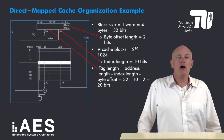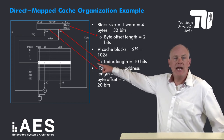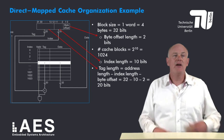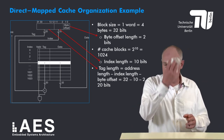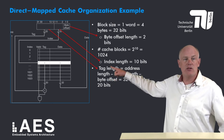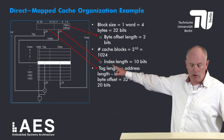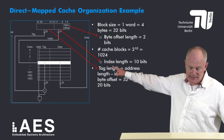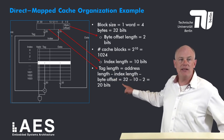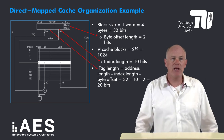This shows the organization of a direct map cache. At the top we have the requested word address, split into several parts. The last two bits are the byte offset, needed to address a byte within a word. The next ten bits are used to index the cache, indicating 2 to the power of 10 — 1024 blocks — are in our direct map cache. The remaining bits are the tag: tag length equals 32 minus 10 minus 2, which is 20 bits.